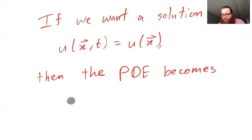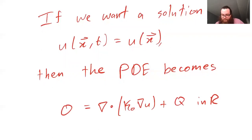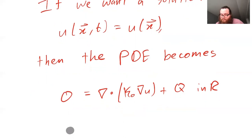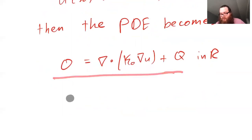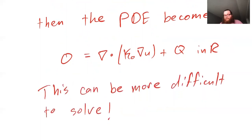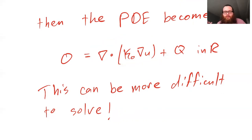If we want a solution of this time-independent form, taking a time derivative gives zero on the left-hand side — since du/dt is zero, that term disappears. We end up with an expression where the divergence of the gradient of u plus the source term equals zero, and this PDE holds within our region R — a two or three dimensional region. In general, this can be much more difficult to solve than the one-dimensional situation because you're working with multiple variables, and we don't yet have tools to address these.